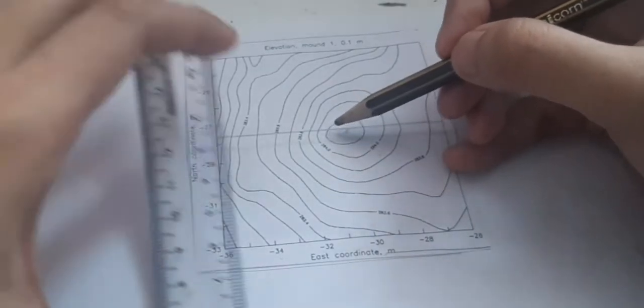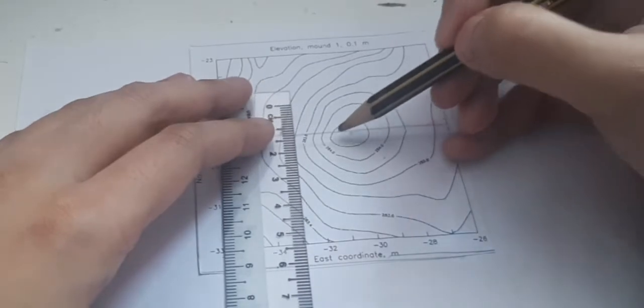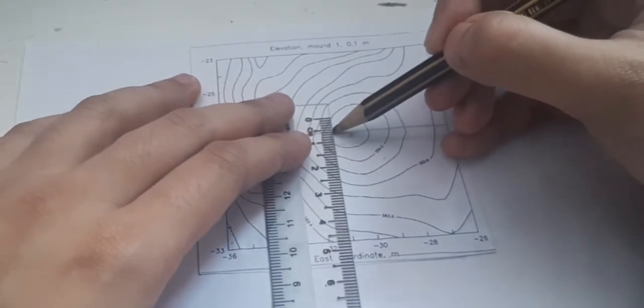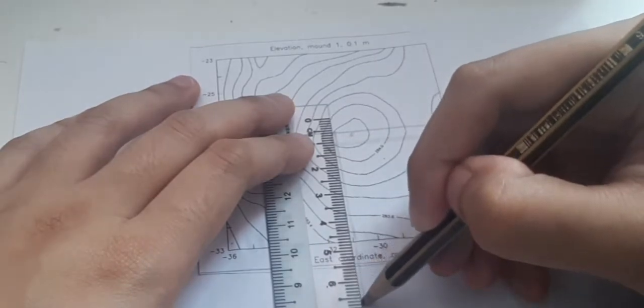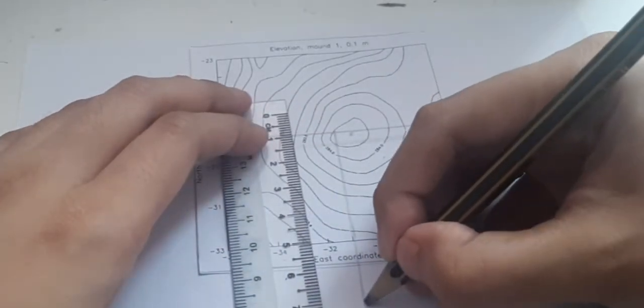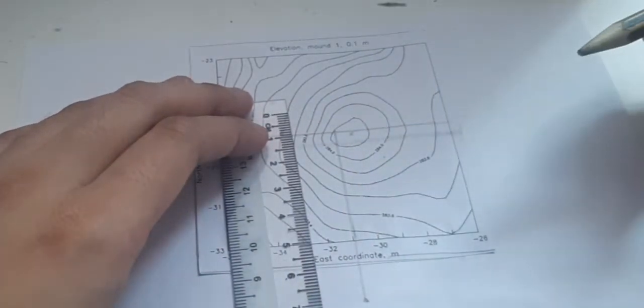Now what I'm going to do is I will underline, start from the highest downward. So here. Then I make some dots.